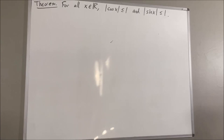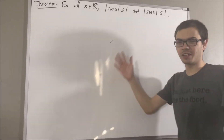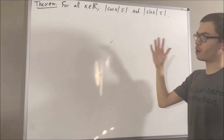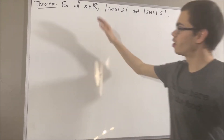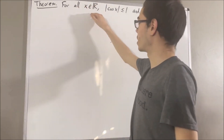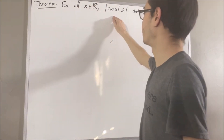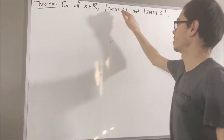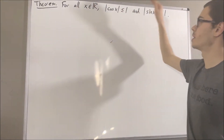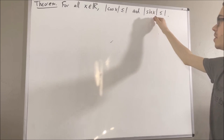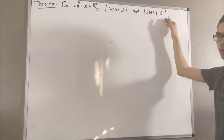Hello! In this video, we are going to prove the following theorem: for all real numbers x, the absolute value of cosine x is less than or equal to 1, and the absolute value of sine x is less than or equal to 1.